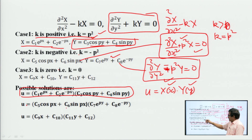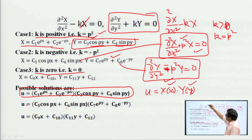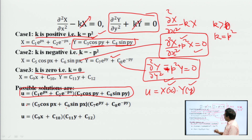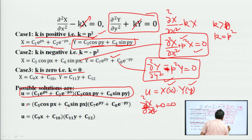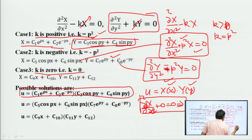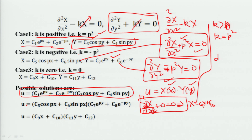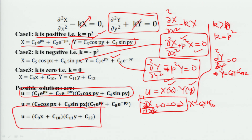Third case: if k equals zero, the right-hand-side terms become zero. The equation reduces to del²X/del x² = 0 and the solution would be linear: X = c₉x + c₁₀. Similarly d²Y/dy² = 0 gives Y = c₁₁y + c₁₂. So in the last case when k = 0 we get this linear solution.